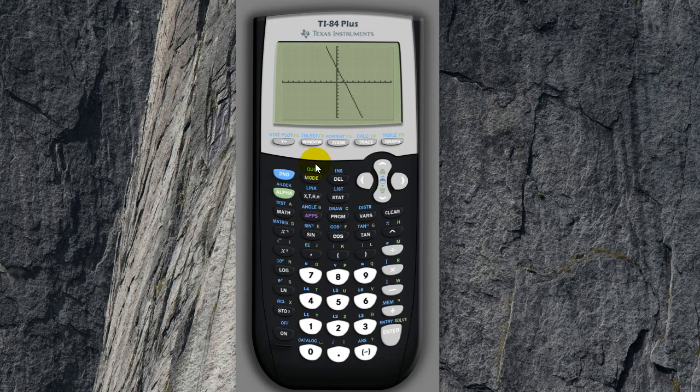If you press 2nd, window, which gets to the table set function, let's say I want to find out all the x and y values of this line from x equals 0. You can press 0 here, press enter, press enter again, and if you go to 2nd, graph, you can see a table of values.